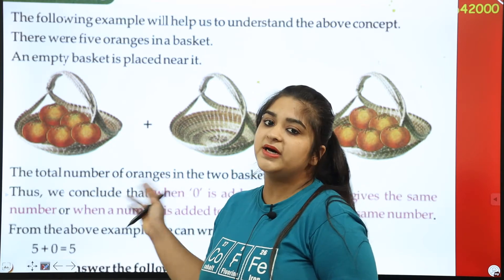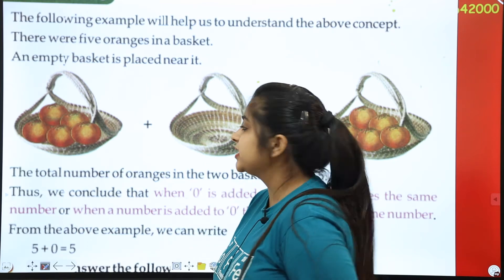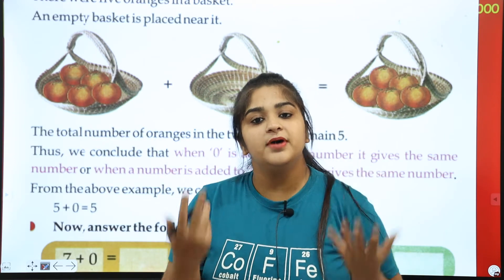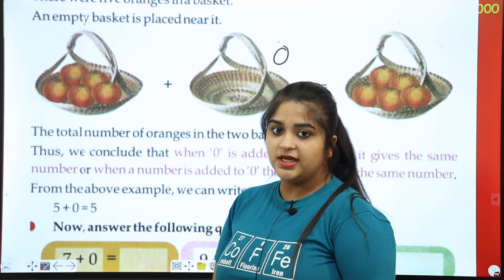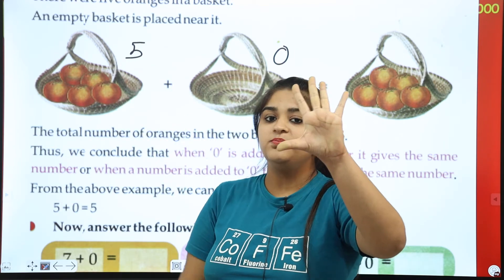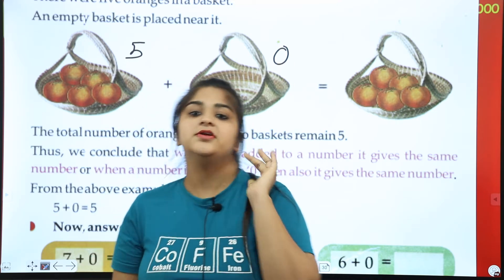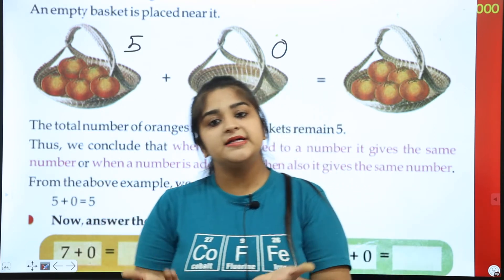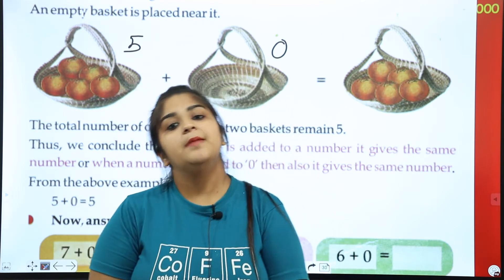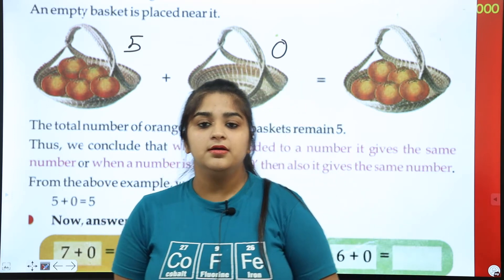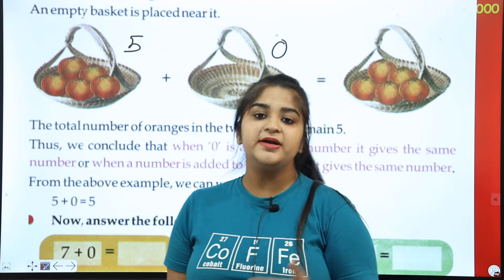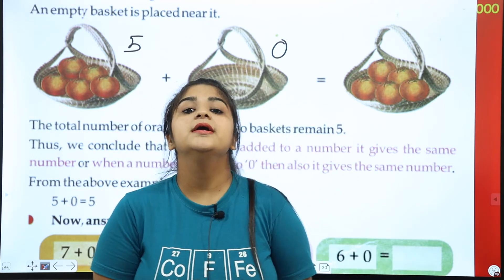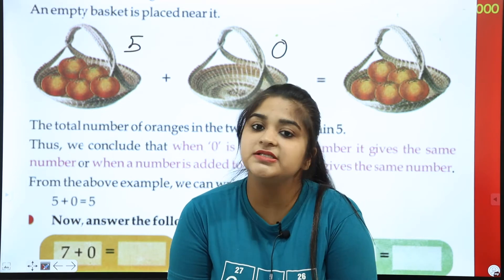The total oranges in the 2 baskets are 5. The second basket placed beside it was empty — there was nothing in it. So 5 plus 0: zero means nothing to add. So what will be the answer? 5 will remain. There are 5 oranges in one basket, the other basket placed with it is empty, so 5 plus 0 gives you an answer of 5 only.